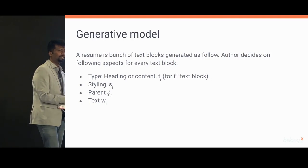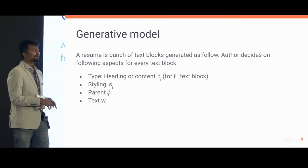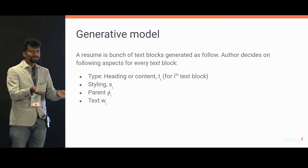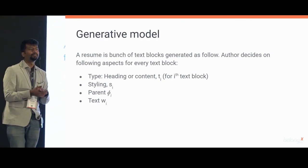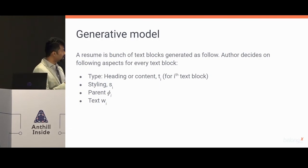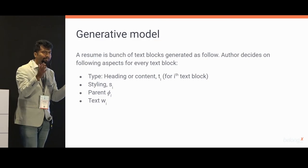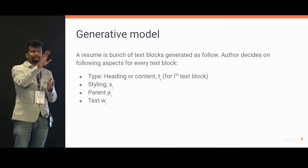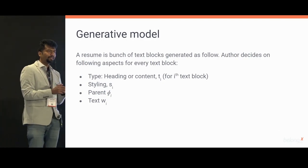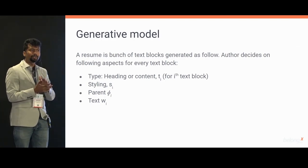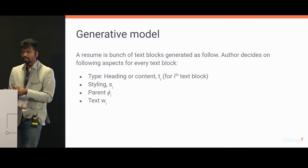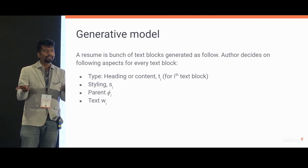As before, to apply a sampling algorithm to extract meaning from this data, we have to define the generative model — how do people write their resumes? A resume is nothing but a bunch of text blocks. Each text block can be a heading type or actual content, it has a certain styling, you decide where it should be nested, and what you're going to write there. For example in the work experience section, you put in the heading of the current company and then write what you do in that company. So there is some sort of structure there.